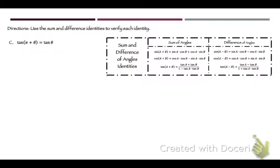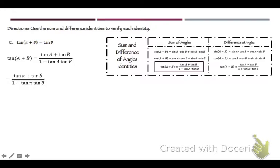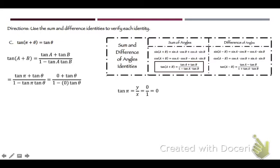For tangent(π + θ), use tangent of A plus B with π as A and θ as B: (tangent π + tangent θ) over (1 − tangent π × tangent θ). Tangent of π is Y/X; the point at π is (−1, 0), so Y = 0 and tangent π = 0. Plugging in: (0 + tangent θ) over (1 − 0 × tangent θ) = tangent θ over 1 = tangent θ. That's what we wanted — we're golden.